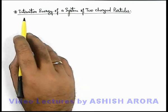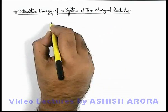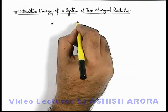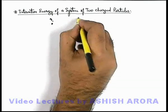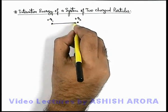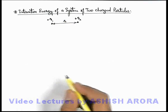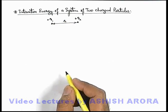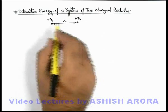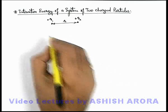Let us discuss the interaction energy of a system of two charged particles. We are given two charge particles q1 and q2, both positively charged and separated by a distance r. We wish to find out the interaction energy or electrostatic potential energy of the system of these two charges.